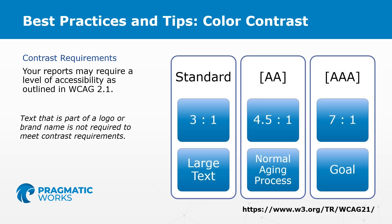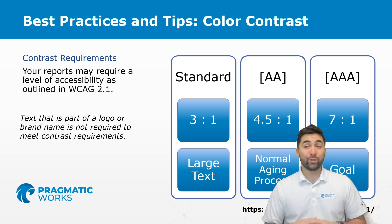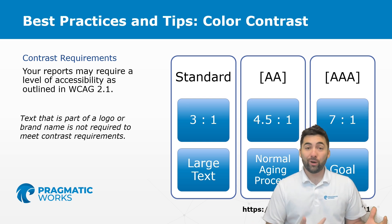Here are some of the standards related to that. A color contrast of 3 to 1 is okay, but not very good. A 4.5 to 1 is what you'd look at as you age. Then you have the gold standard where we want to achieve a goal of 7 to 1. You could go all the way to 21 to 1 as a color contrast ratio.